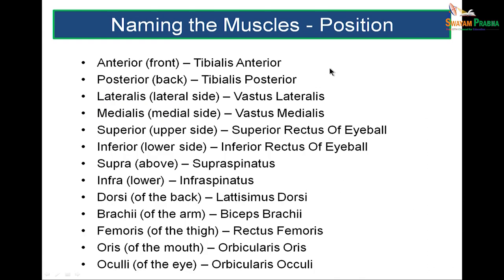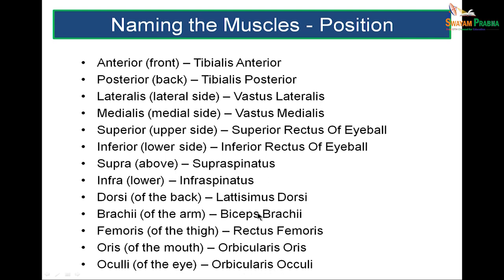Naming muscles based on their position in the body: anteriorly placed — tibialis anterior; posteriorly placed — tibialis posterior; laterally placed — vastus lateralis; medially placed — vastus medialis. Similarly, superior and inferior: superior rectus, inferior rectus. Supra or infra: supraspinatus, infraspinatus. Dorsi of the back — latissimus dorsi. Brachia of the arm — biceps brachii. Femoris of the thigh — rectus femoris. Oris of the mouth — orbicularis oris. Of the eye — orbicularis oculi.